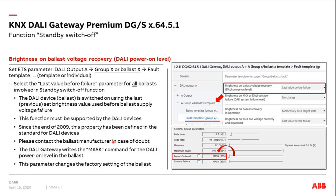When we set the parameter 'last value before failure' in ETS, the DALI gateway writes this information into all the ballasts — the power-on level is set to 'mask'. Using a special tool like the DALI Master Configurator, you can read out all settings of an individual ballast and see the power-on level is set to mask. If the value cannot be changed, you may need to replace the ballast.